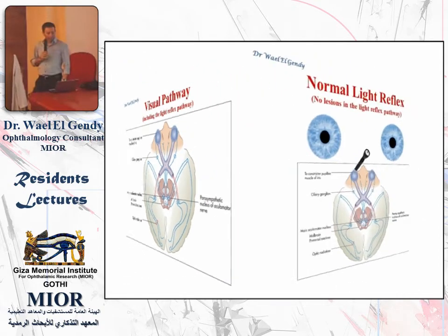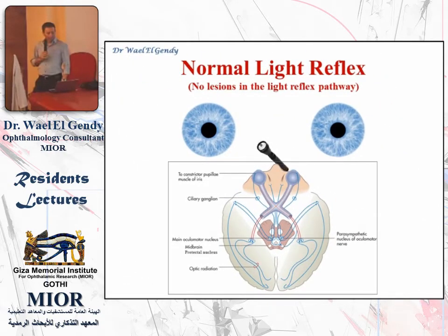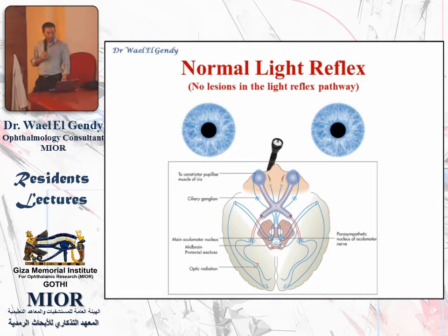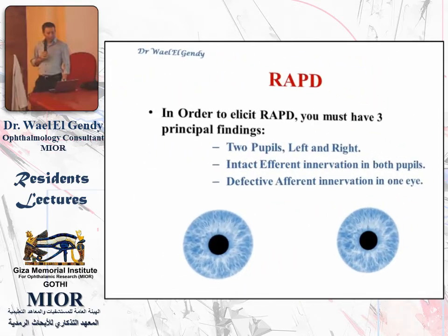Our first example is the normal light reflex when you're swinging your flashlight between both eyes and you have no lesions in the visual pathway or the light reflex pathway. The pupils will both be constricted in response to the light, and when you swing the flash from left to right, you will see no movement in the pupils. The pupils are both constricted, and you will see no dilatation or re-constriction because the pupils are already constricted by the direct and consensual reflex at the same time.